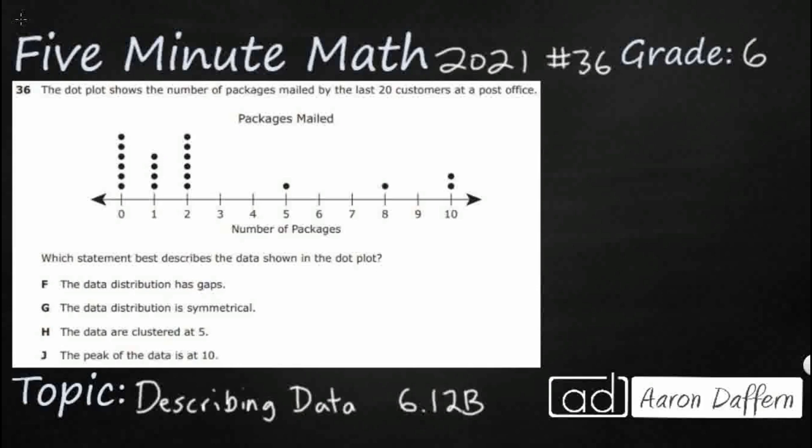So we have a dot plot that shows the number of packages mailed by the last 20 customers. So 20 people walked in, and they are simply keeping track of how many customers mailed zero packages, one package, two, and it looks like we have got some 5, 8, and 10, but we don't necessarily have every single number between that 0 and 10.